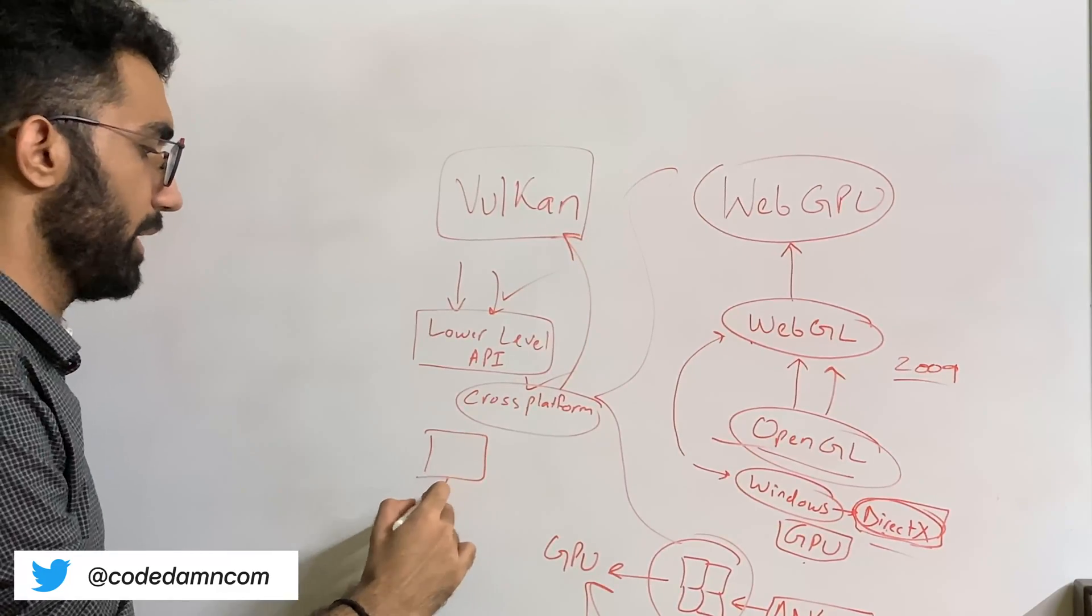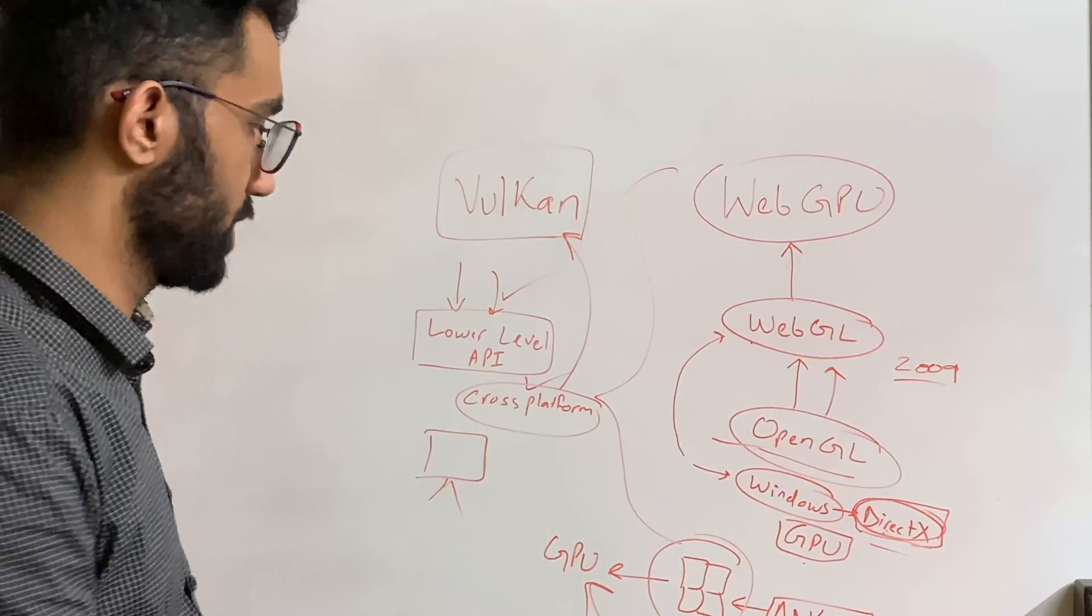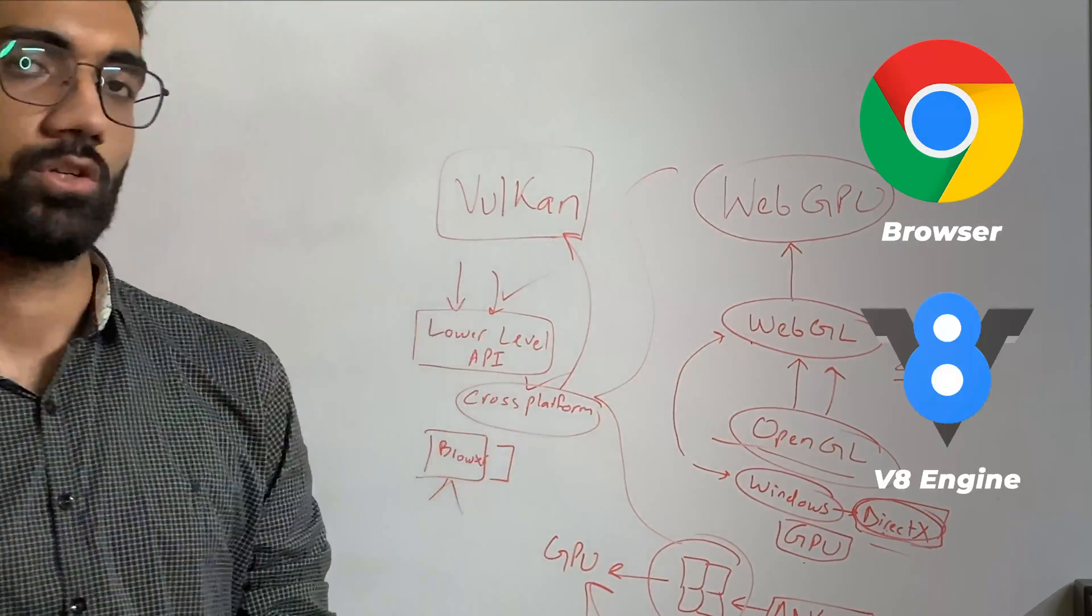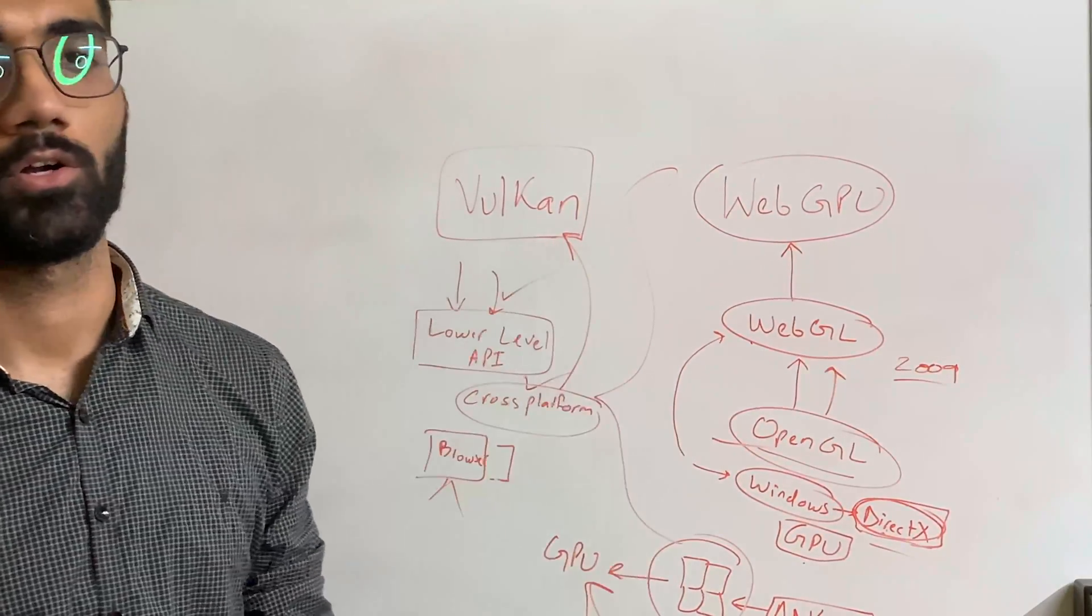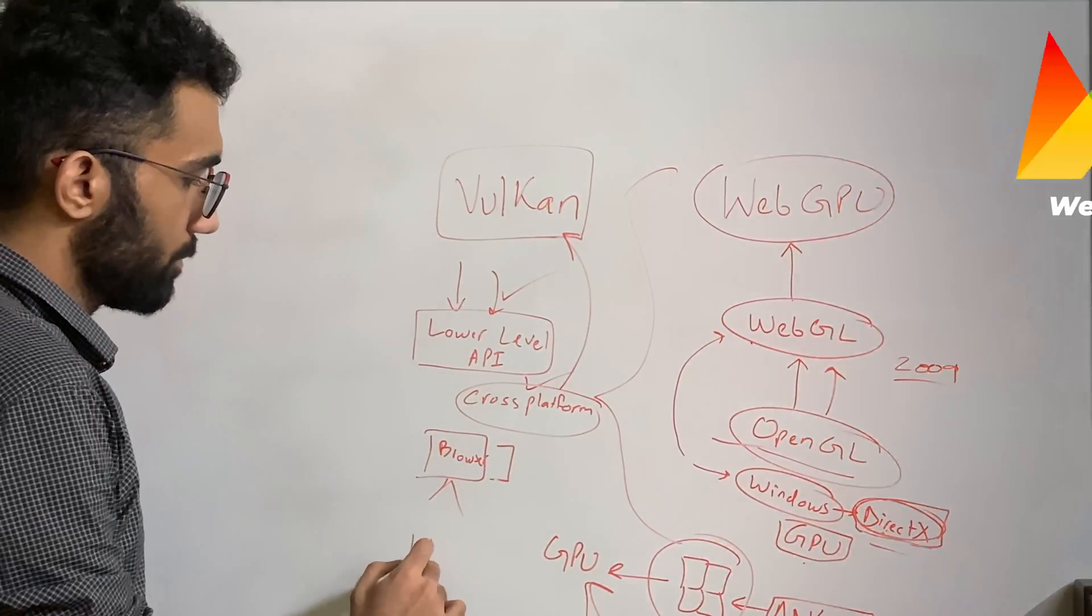And web browsers are running inside of, I mean, your web page is running inside a virtual machine called a browser. So now this virtual machine, this browser, this V8 engine or whatever browser you use, needs to have access to Vulkan in order to access the GPU. So that is where web GPU comes in.